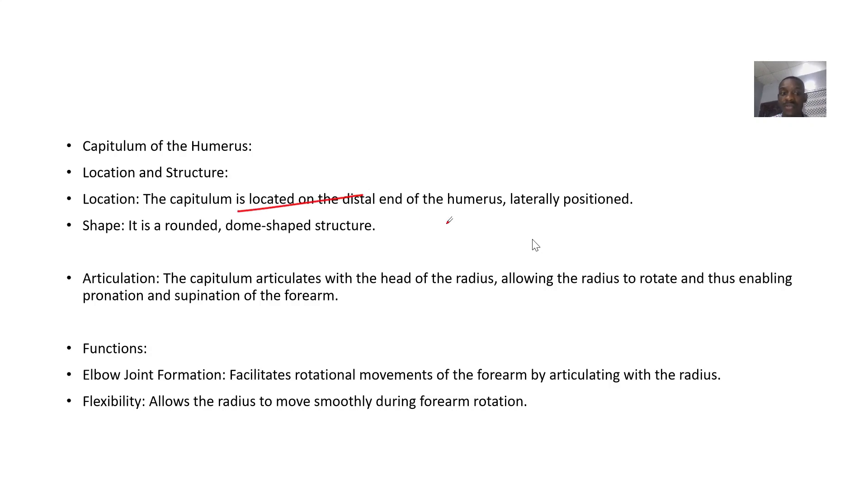The capitulum articulates with the head of the radius, allowing the radius to rotate, thus enabling pronation and supination of the forearm.